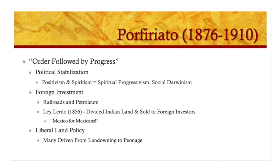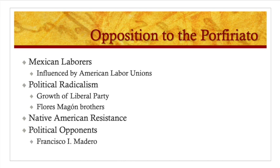His liberal land policy promised land to many people, but had the effect of driving many indigenous people from their landholdings and reducing them to debt peonage. For Mexican laborers, many were influenced by American labor unions as industrialization came into Mexico, and they were fighting for better wages. There was also a lot of political radicalism, giving rise to the growth of liberal parties. One example is the Flores-Magón brothers, who fled Mexico, came to the United States, and settled for a while in San Antonio, Texas, as they fled threats against their lives.